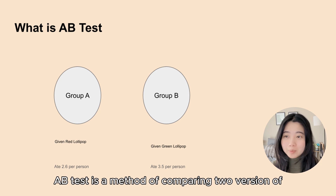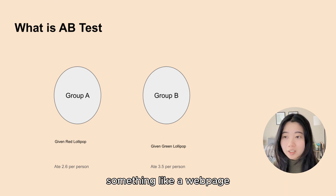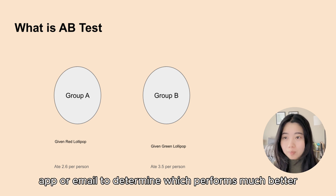An A/B test is a method of comparing two versions of something — like a web page, app, or email — to determine which performs better.